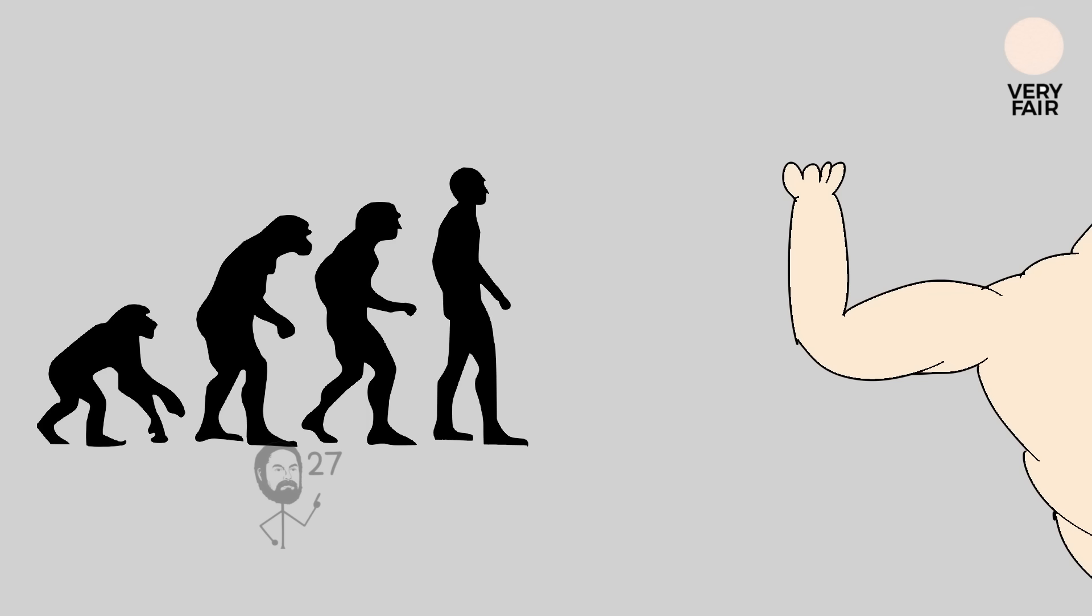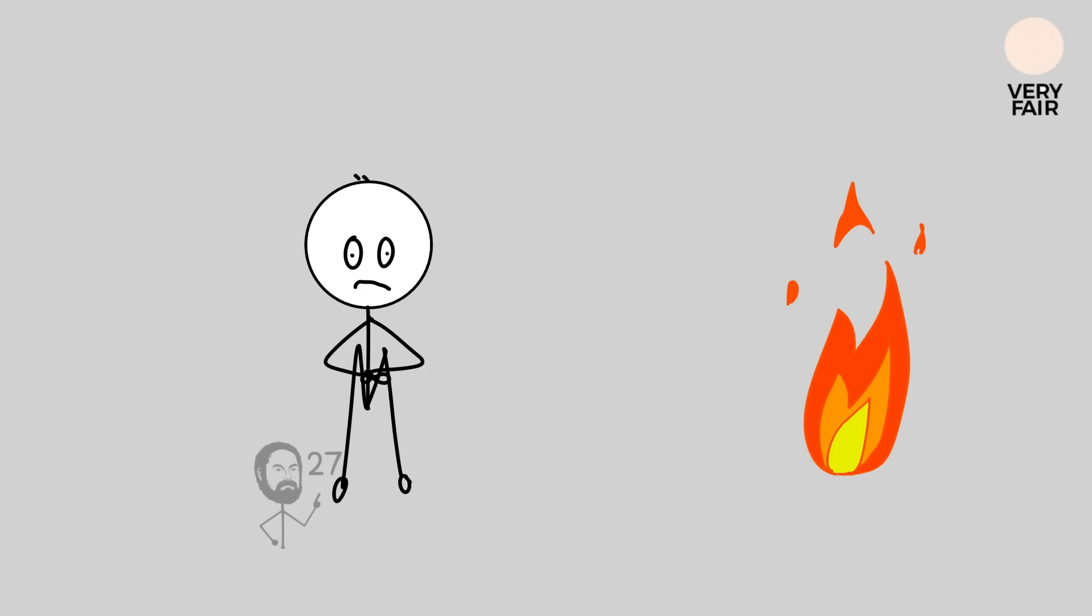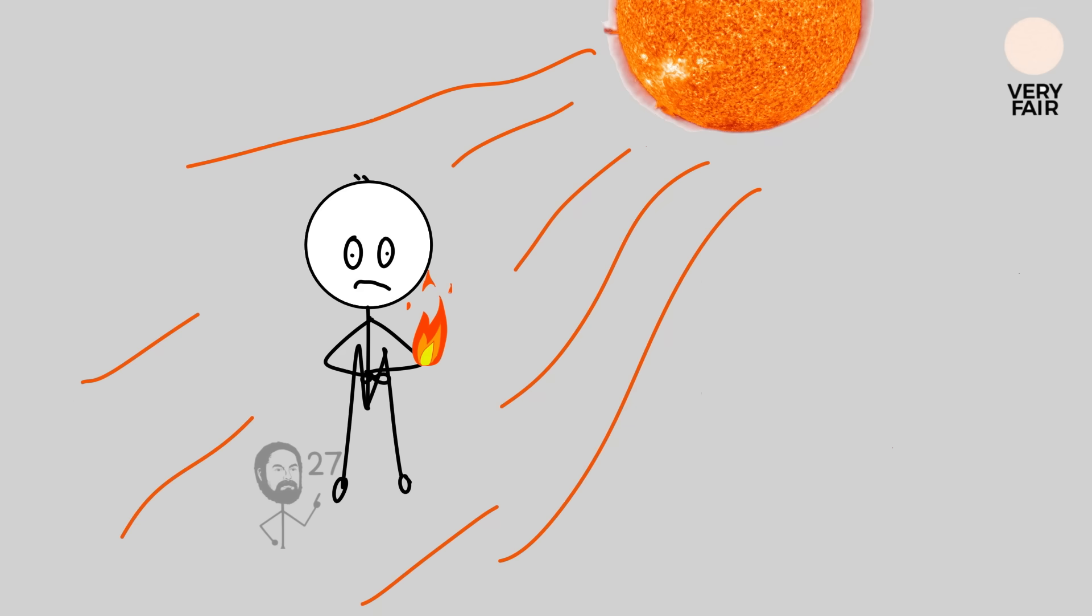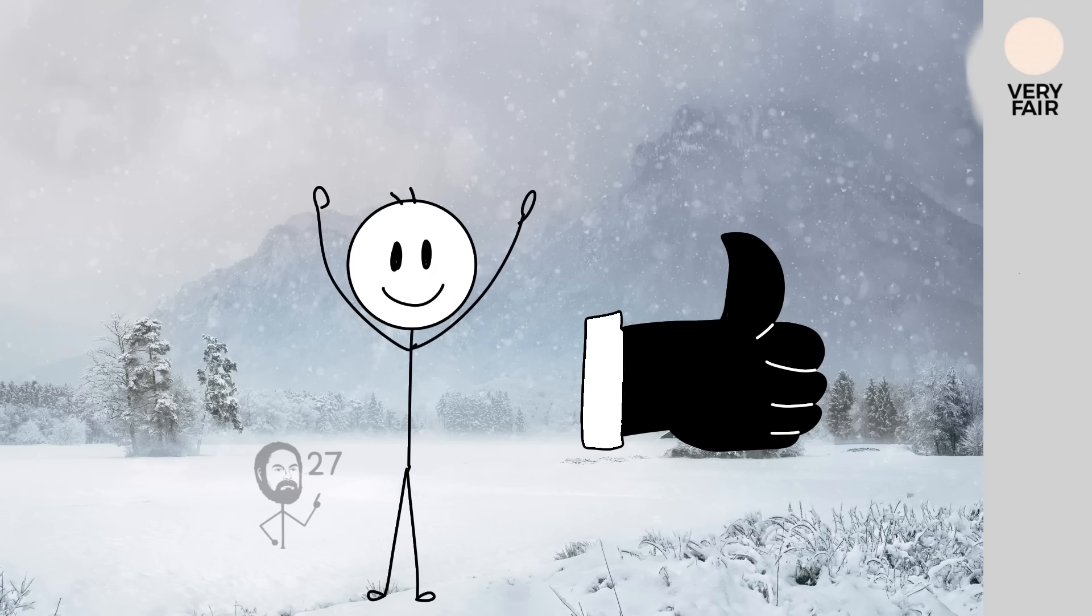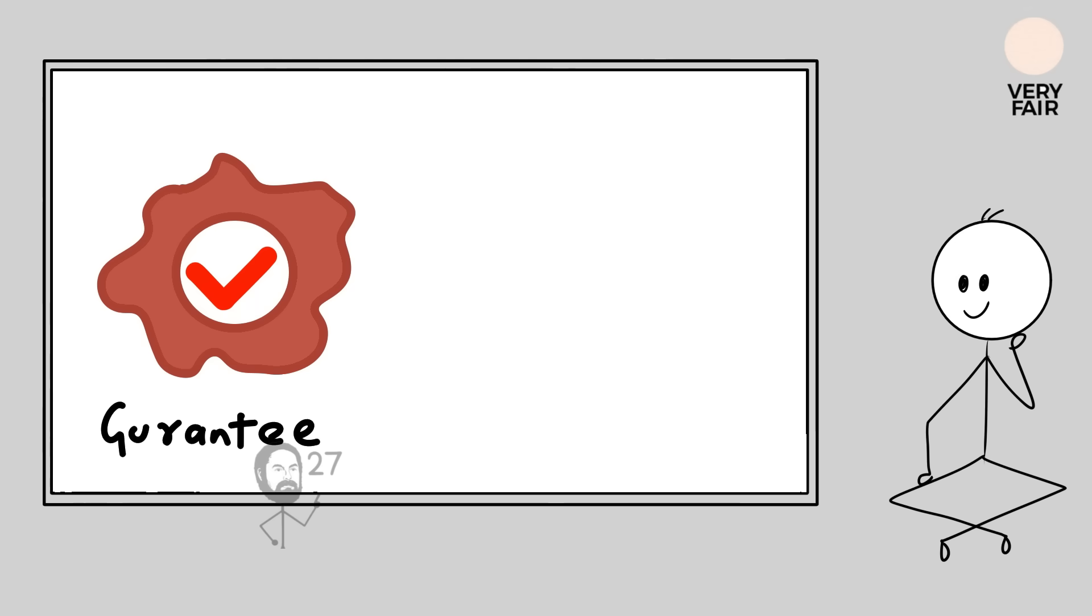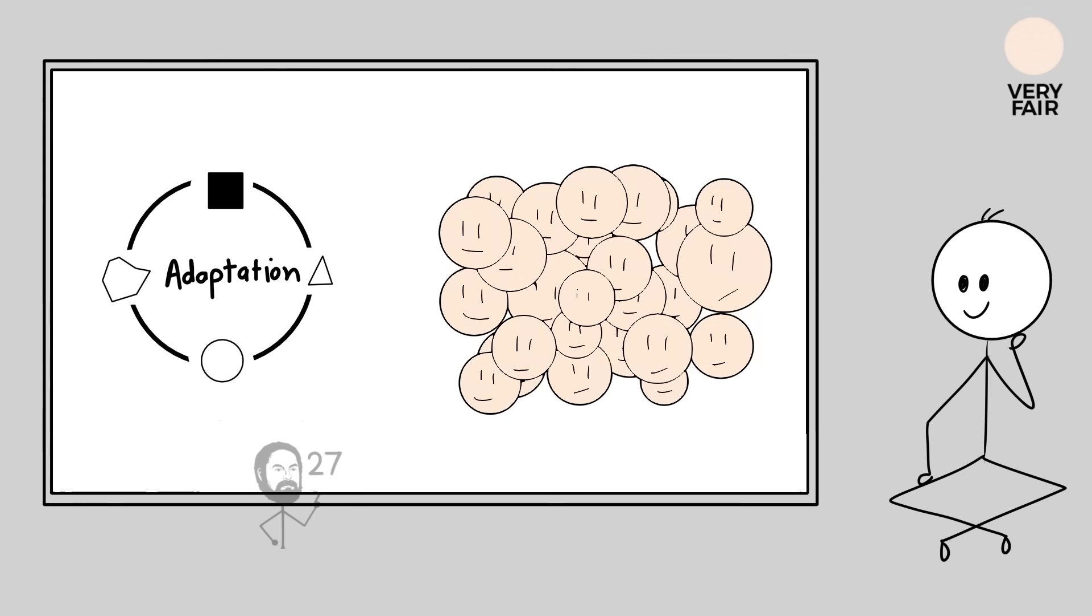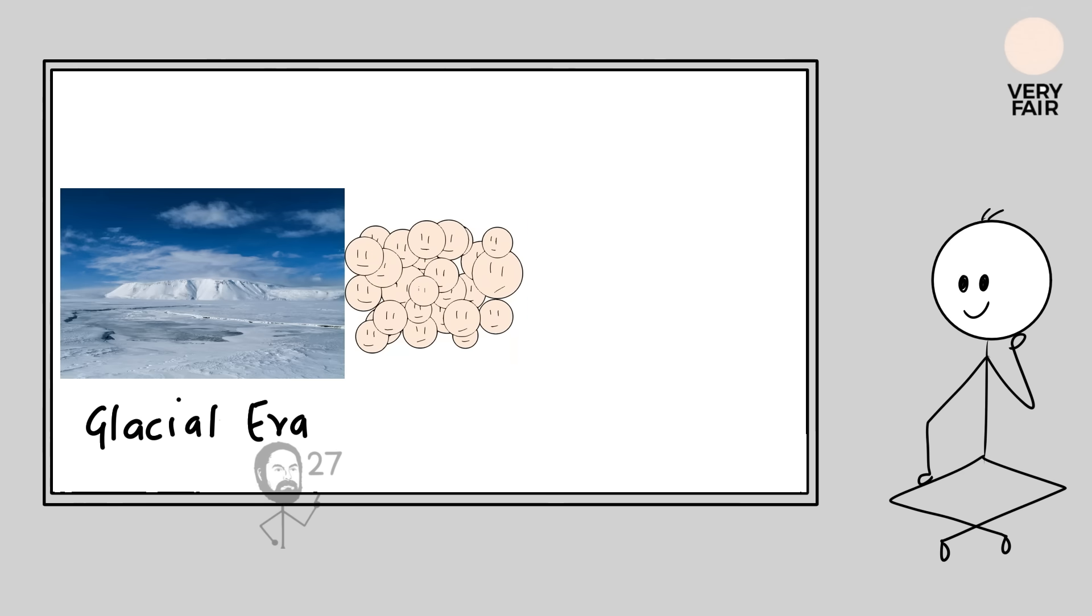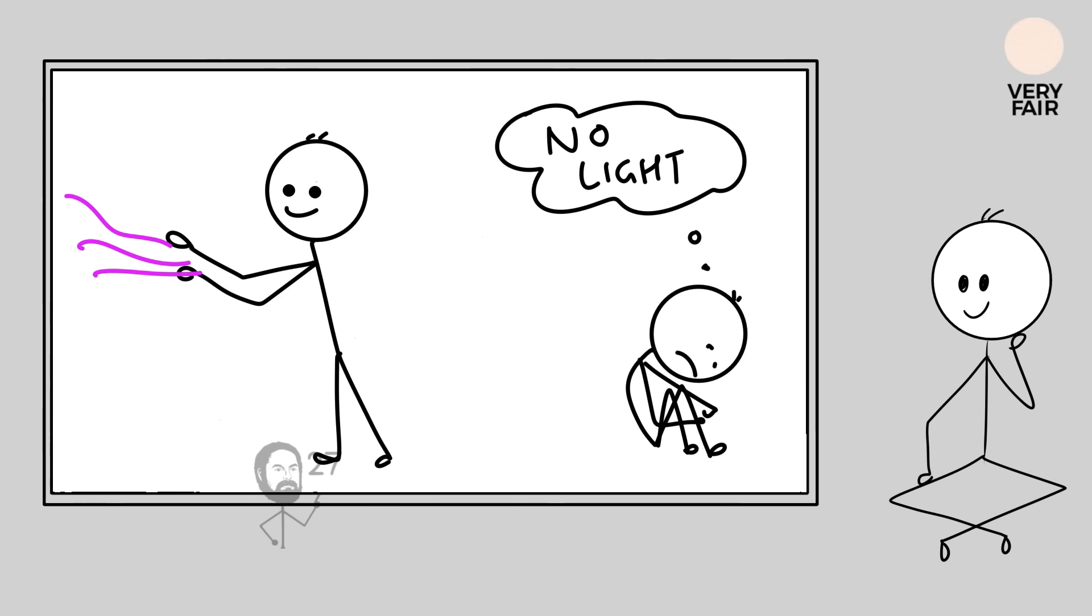The evolutionary strength of this tone lies in its extreme efficiency in harnessing minimal light. Although it is highly vulnerable to burning under intense sun, this vulnerability was not a disadvantage in regions where skies are often overcast and UV exposure is weak. Instead, it became a survival mechanism, guaranteeing that even the smallest amounts of radiation could be converted into the nutrients needed for strong bones and healthy offspring. This adaptation reflects how human populations adjusted precisely to glacial and post-glacial environments, where thriving depended on making the most of every ray of light available.